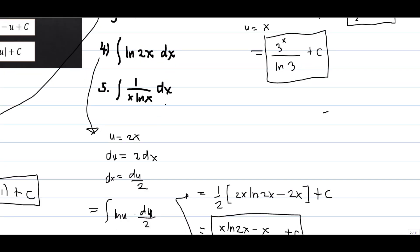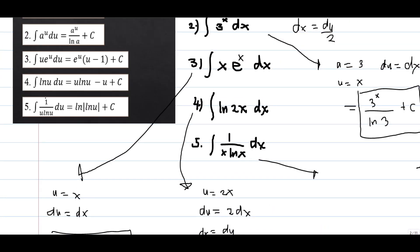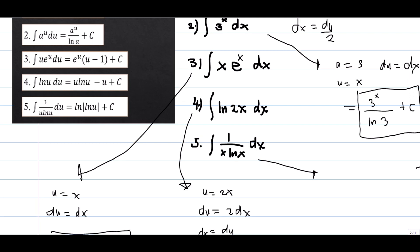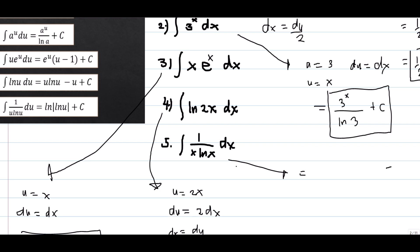Problem number five: using theorem number five, the integral of 1/(u·ln u) du equals ln|ln u| plus C. Here u = x and du = dx, so the equivalent integral is ln|ln x| plus C. That is the final answer.